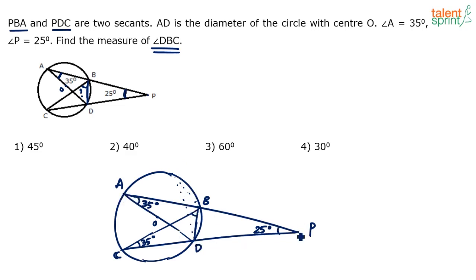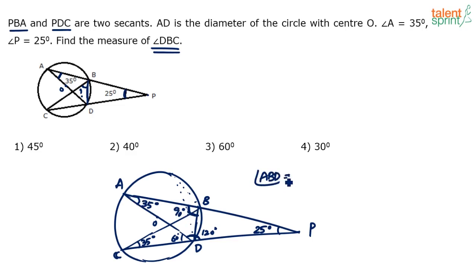Now consider the bigger triangle with angle P = 25 and angle C = 35. Their total is 60, so angle D in the triangle is 120. This side will then be 60. Now, the angle subtended by chord AD at point B is 90 degrees because AD is the diameter, and the diameter subtends an angle of 90 degrees at any point of the circle. So angle ABD equals 90 degrees.